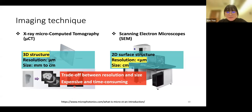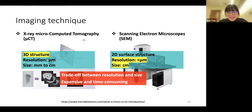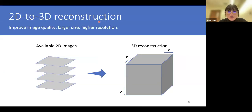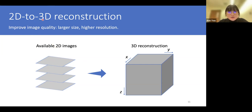Both imaging techniques suffer from a trade-off between image resolution and size, making it very challenging to acquire high-resolution, large-size images. Also, the imaging process is very expensive and time consuming due to the high expense of those imaging machines and the high sampling rate during imaging. One approach to relieve the pressure of those imaging techniques is 2D-to-3D reconstruction, where the 3D structure of rocks is reconstructed from available 2D images.